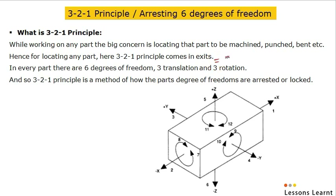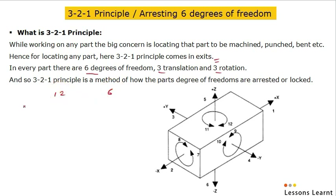The 3-2-1 principle is used for locating a part. But before that, we should know how many degrees of freedom there are for a part. There are 6 degrees of freedom: 3 translation and 3 rotation. Some people consider 12 degrees of freedom, some consider 6. In 12 degrees of freedom, there are 6 translation and 6 rotation.